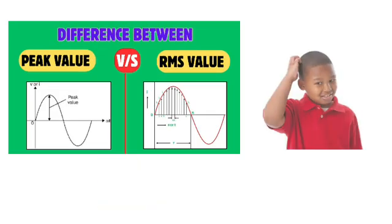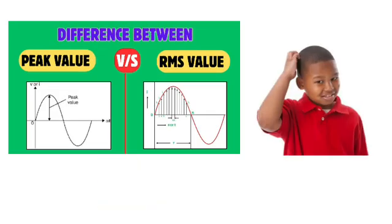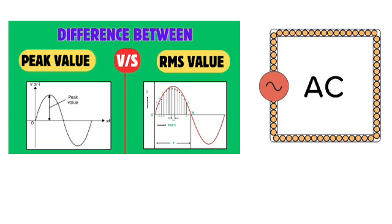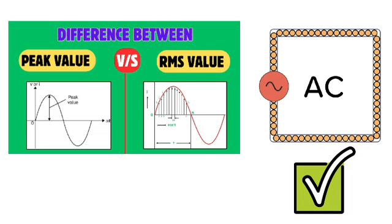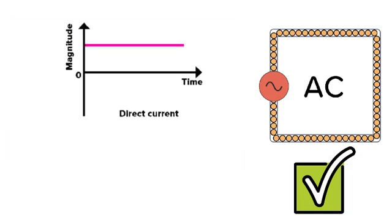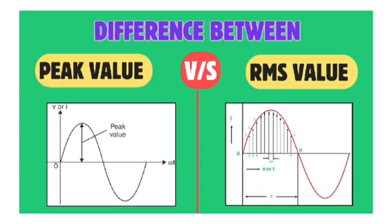Before going to know about the concept of RMS value and peak value, you have to remember one thing: the concept of peak value and RMS value is only applicable for AC. In DC there are no sinusoidal waves available, so that's why it is very important in case of AC. So first of all, let's see what is peak value.